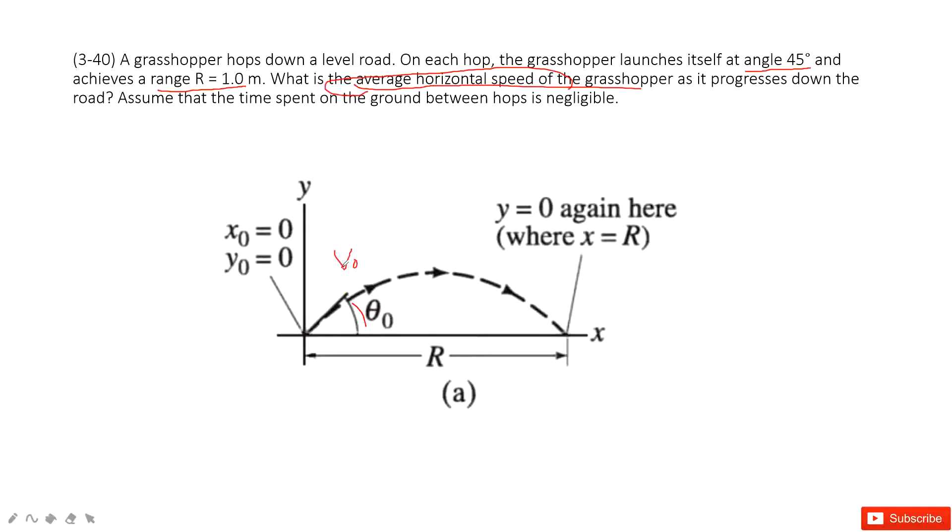After we get the v0, we project it in X-component and Y-component. So, horizontal speed, this one is vOx. This is what we need to find.